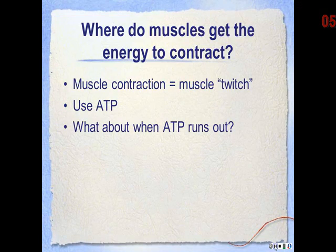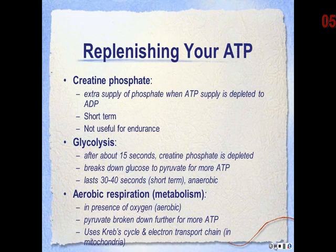So where do the muscles get this energy to contract? Muscle contraction is sometimes referred to as a muscle twitch. We know this process uses ATP, so in the next couple of slides we're going to look at some ways that the muscle obtains ATP.